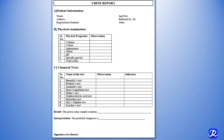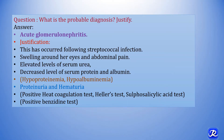The probable diagnosis will be glomerulonephritis — specifically acute glomerulonephritis. Justification: this condition occurred following streptococcal infection, and glomerulonephritis is common after streptococcal infection. There is swelling around the eyes and abdominal pain.